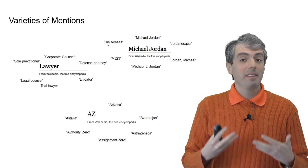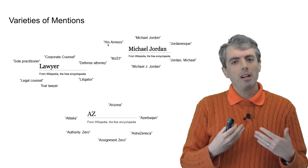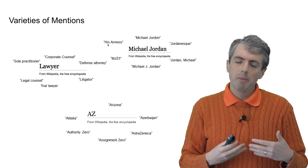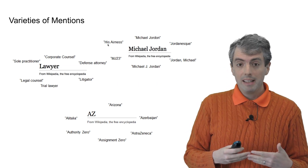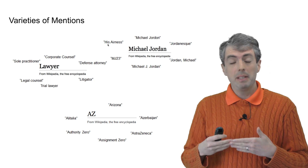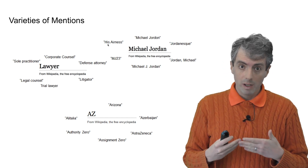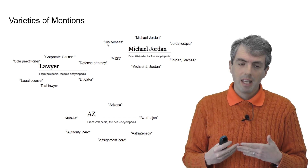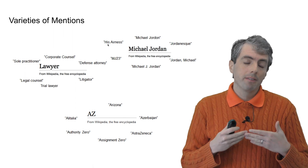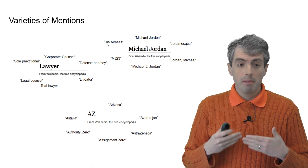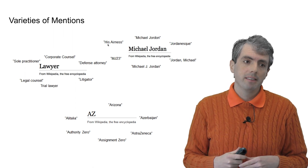Doing this right is difficult. The way that you see someone talked about on Twitter can be very different from the way that they might be canonically mentioned in Wikipedia. And even within Wikipedia, there are a variety of ways that people talk about specific entities.